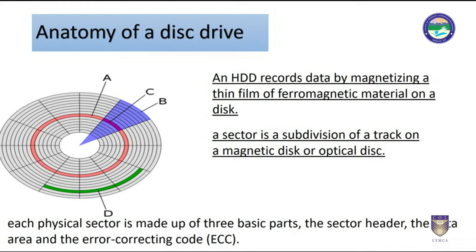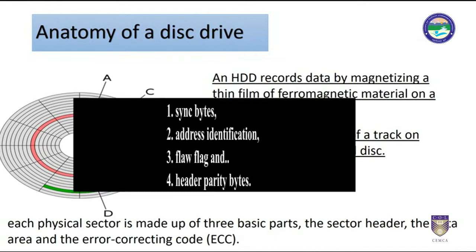Each physical sector is made up of three basic parts: the sector header, the data area, and the error correcting code. The sector header contains information used by the drive and the controller, including sync bytes, address identification, flaw flag, and header parity bytes.